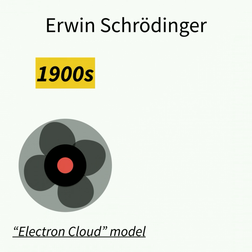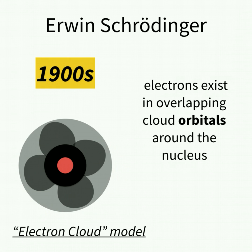Later on, Erwin Schrödinger came up with the electron cloud model. In this model, he postulated the behavior of electrons. Electrons existed in overlapping cloud orbitals around the nucleus, according to Erwin Schrödinger.